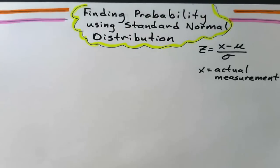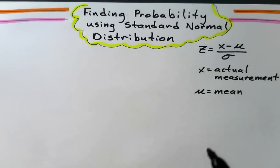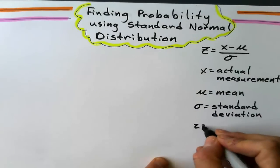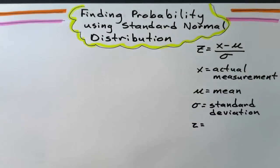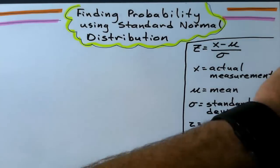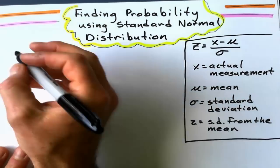First of all, X is going to be our actual measurement, some number that we're given. Mu is the mean of the distribution and sigma here will be the standard deviation. And of course Z will be how many standard deviations it is from the mean. Most likely it's going to be a decimal. So let's look at a sample problem here.